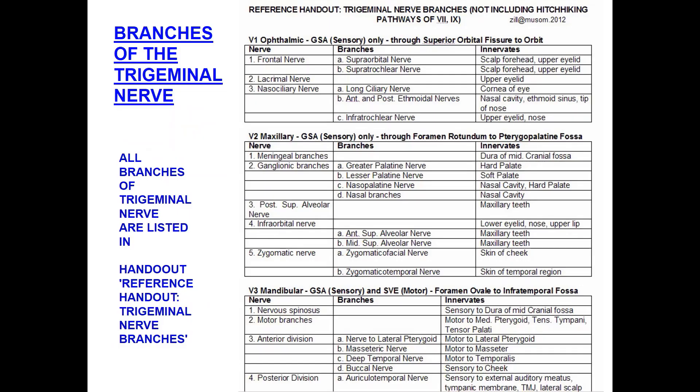Now we collect these branches in a table. The full lecture here will be just an abstract of the branches of each division of the trigeminal nerve. Ophthalmic: frontal, lacrimal, nasociliary. Maxillary: meningeal branch, ganglionic branch, posterior superior alveolar, infraorbital, and zygomatic nerve — each for its respective area of sensation. For the maxillary: infraorbital for the lower eyelid; zygomatic nerve for the skin of the cheek.